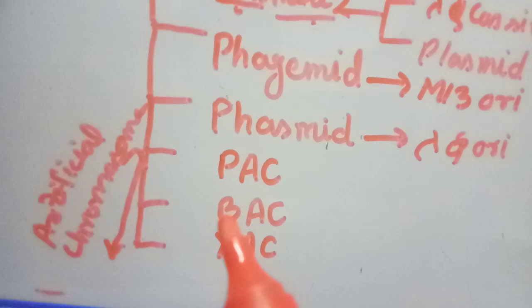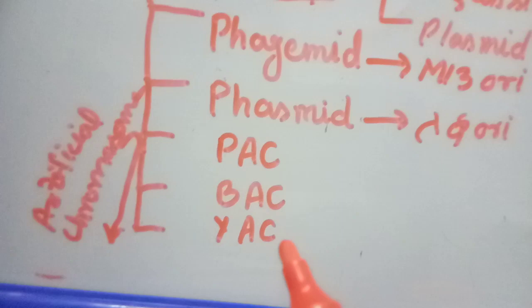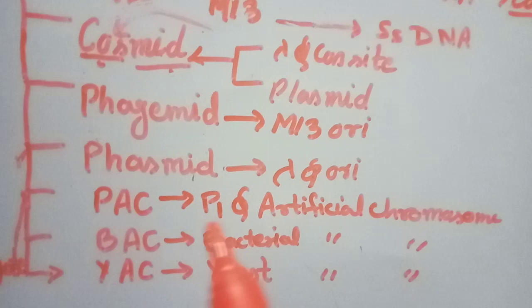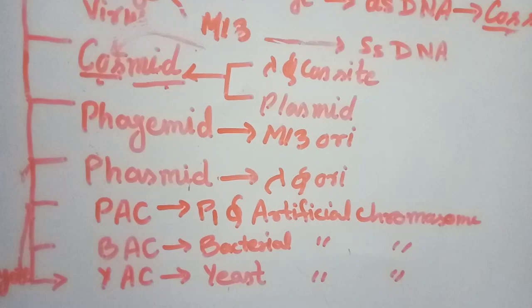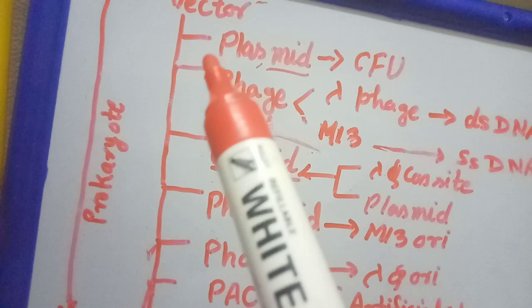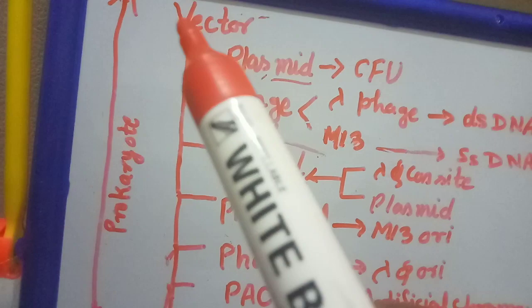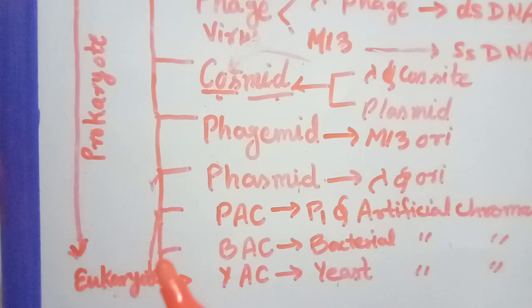From the very beginning, plasmid, phage, cosmid, phasmid, phagemid, PAC, and BAC - all are for the prokaryote.